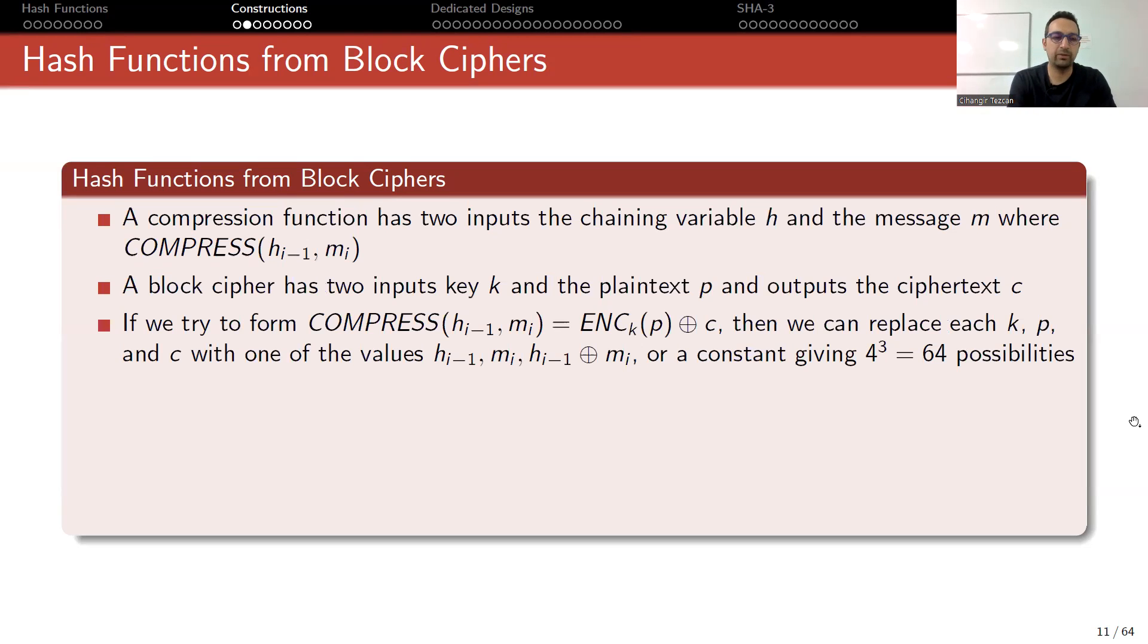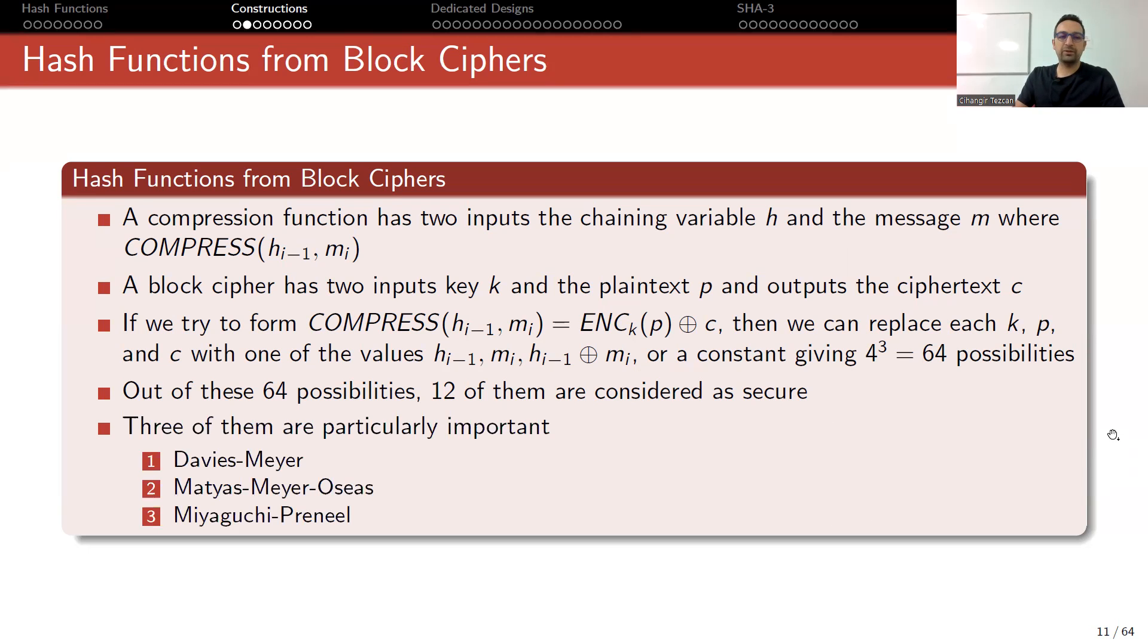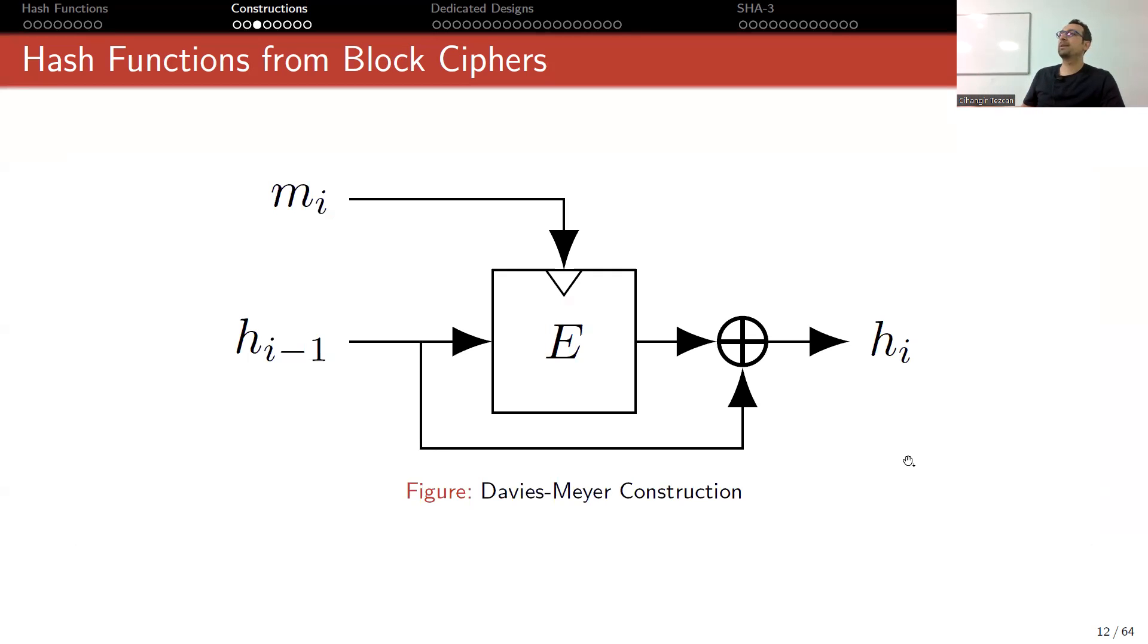If you try to form something like this, then we can replace each secret key, plaintext, ciphertext with one of the variables h_{i-1}, m_i, and so on. This gives you actually 64 different ways to create a hash function. Out of these 64 possibilities, people considered all of them and realized that 12 of them look secure, but three of them are particularly important. These are Davies-Meyer, Matyas-Meyer-Oseas, and Miyaguchi-Preneel constructions.